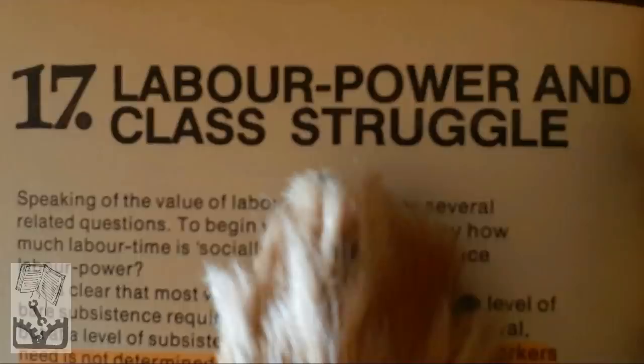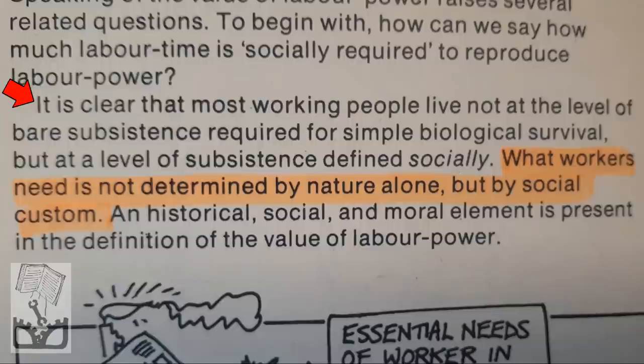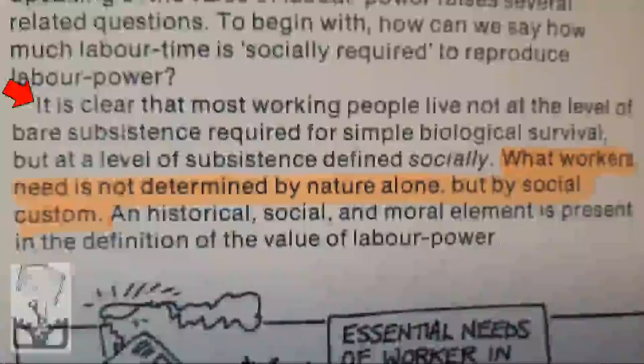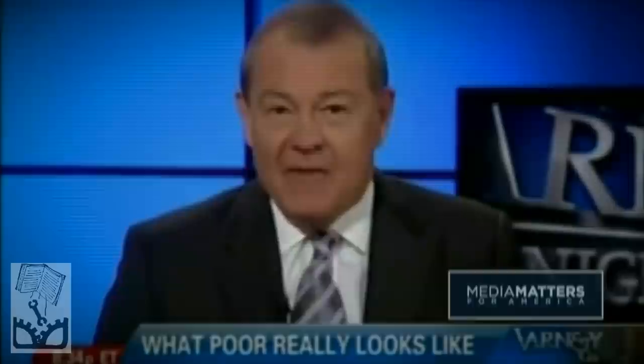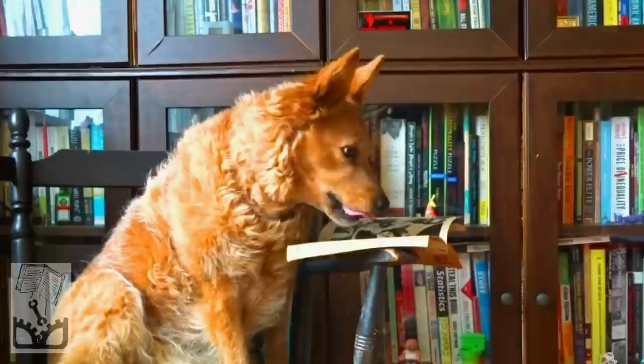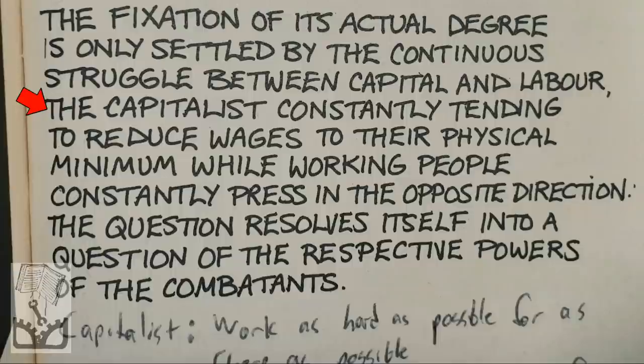Chapter 17: Labor Power and Class Struggle. Smith and Evans clarify: 'It is clear that most working people live not at the level of bare subsistence required for simple biological survival, but at the level of subsistence defined socially — what workers need is not determined by nature alone, but by social custom.' The antagonism between capital and labor expresses itself in conflict over just how much workers require. Poor families in the US are not what they used to be — 99% of them have a refrigerator. The capitalist is constantly tending to reduce wages to their physical minimum, while working people constantly press in the opposite direction.